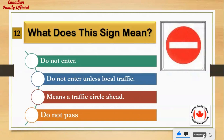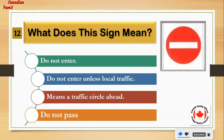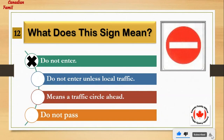What does this sign mean? Number 1: do not enter. Number 2: do not enter unless local traffic. Number 3: means a traffic circle ahead. Number 4: do not pass. And the answer is: do not enter.